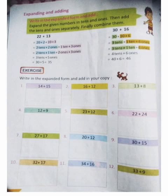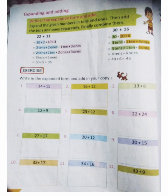Jain student, today I will teach you Chapter 5, learning 2-digit numbers. We will start from page number 48 and today's topic is expanding and adding. اس topic میں آپ کو expanded form سیکھنا ہے اور adding سیکھنا ہے۔ Write in expanded form and add. اس میں آپ کو expanded form میں write کرنا ہے اور add کرنا ہے۔